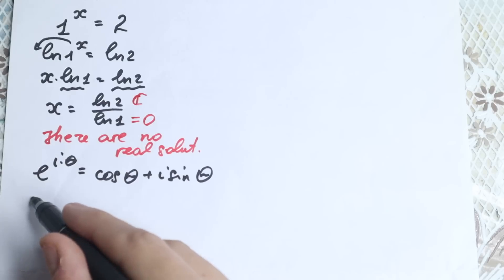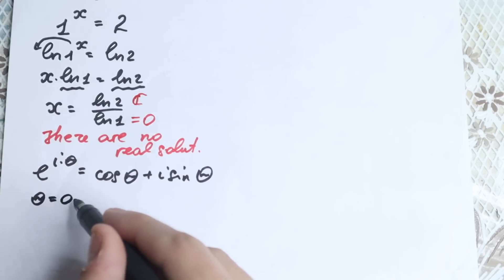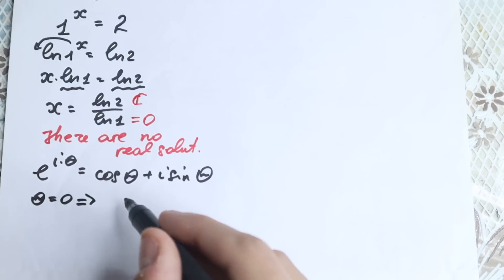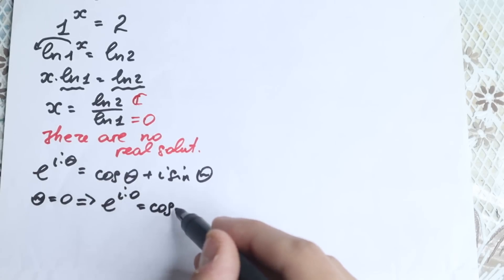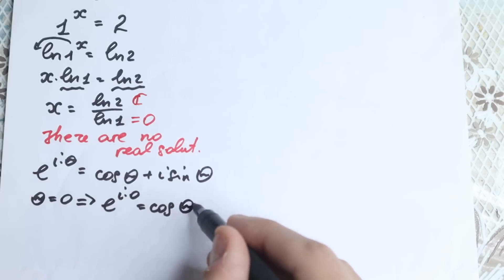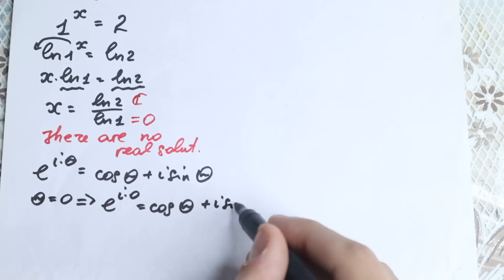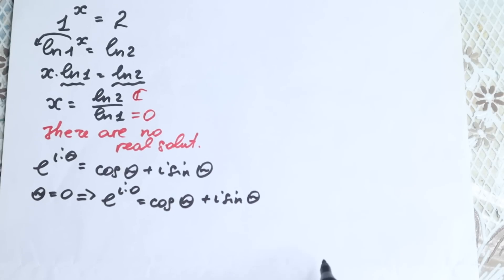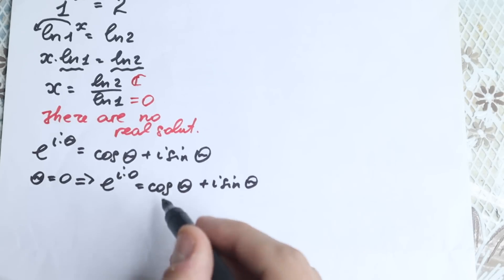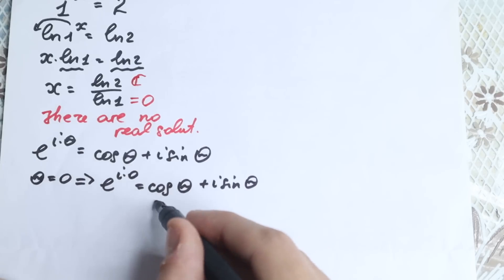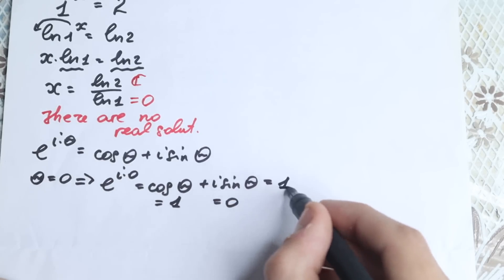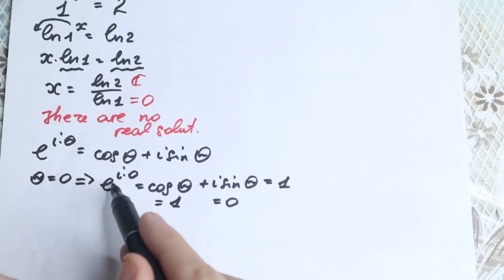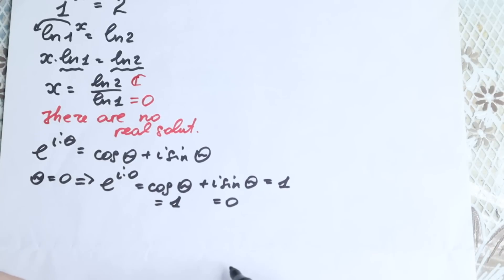Special case 1: when theta equals 0. We have e to the power i times 0 equals cosine 0 plus i sine 0. Cosine 0 equals 1 and sine 0 equals 0, so the result equals 1. This is absolutely correct because e to the power 0 equals 1.